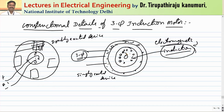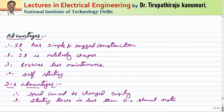The rotor bars are short-circuited, so circulating currents pass through the rotor. These currents produce a flux that interacts with the stator flux to produce torque. We will see this in detail in the next class. Today we are going to look at the construction details of the induction motor.